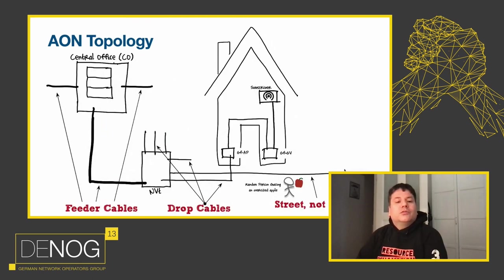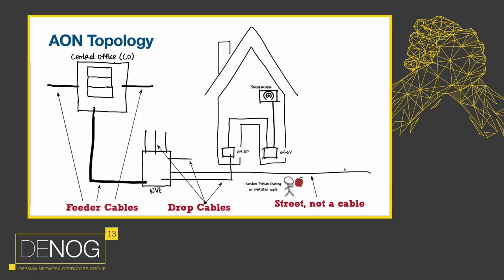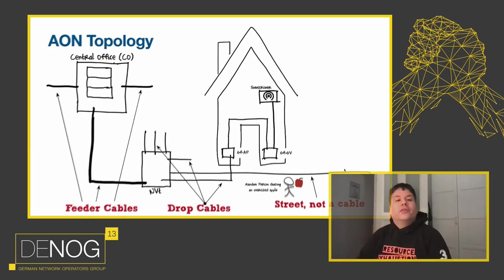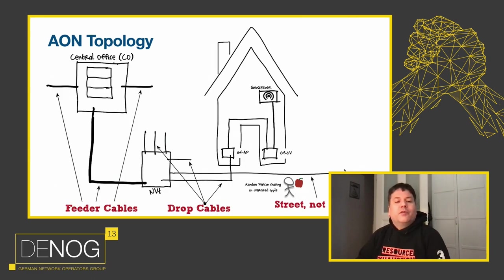Two more definitions: drop cables and feeder cables. Drop cables go from street cabinets towards the houses — they're usually smaller cables. Feeder cables go from the street cabinets towards the central office and are usually larger cables holding many more fibers, where you aggregate multiple buildings and route them further to the central office. In the AON topology, we're mostly talking about just fibers, except for a couple of devices in the central office.